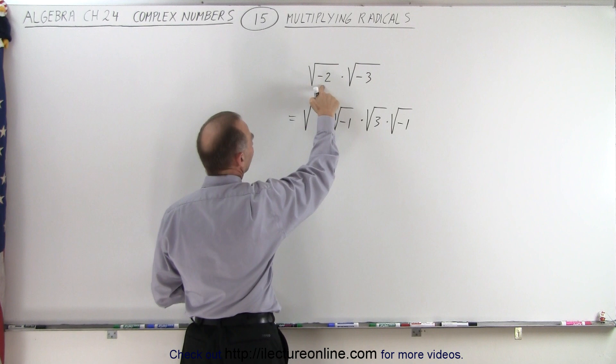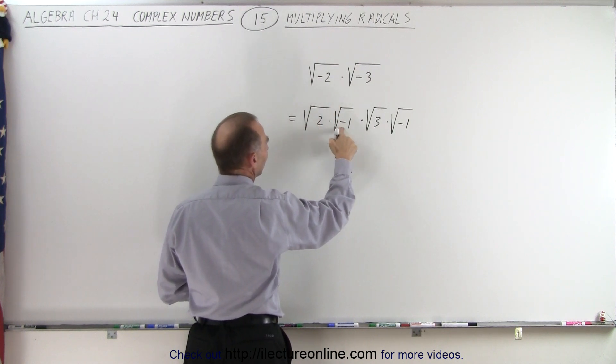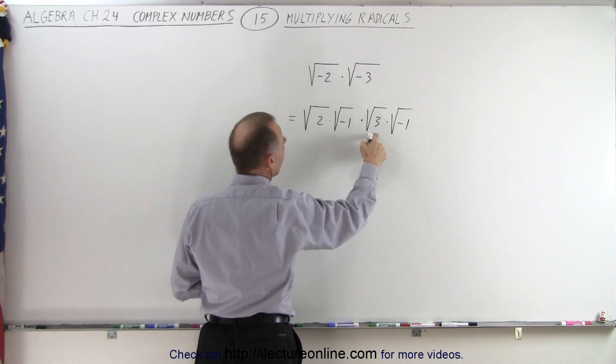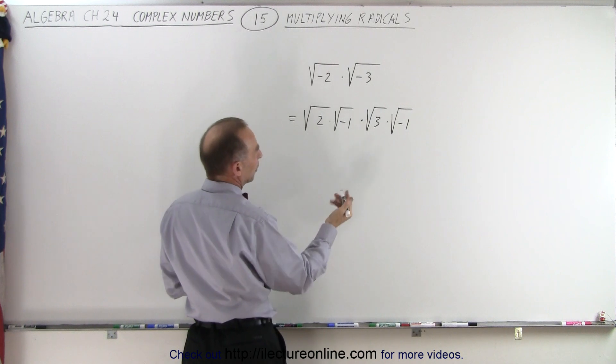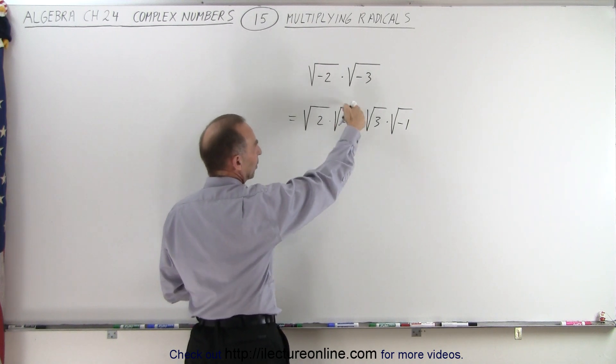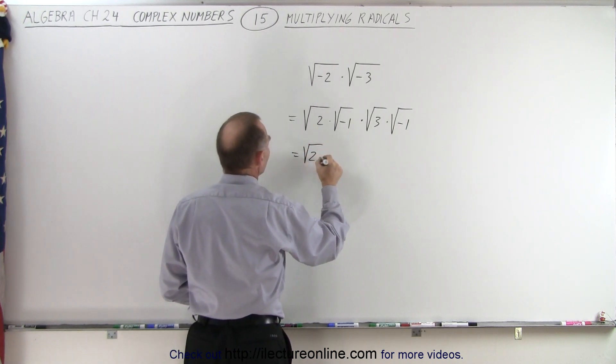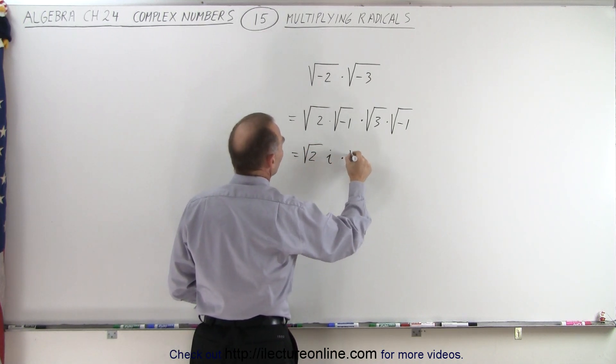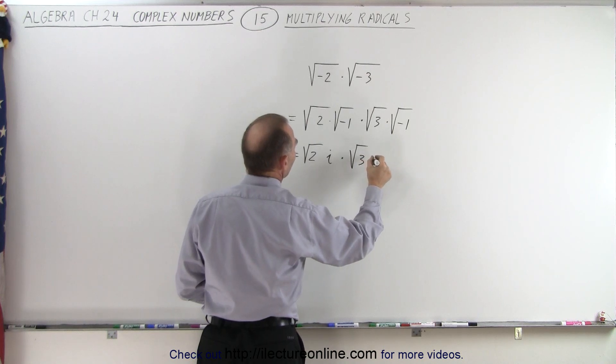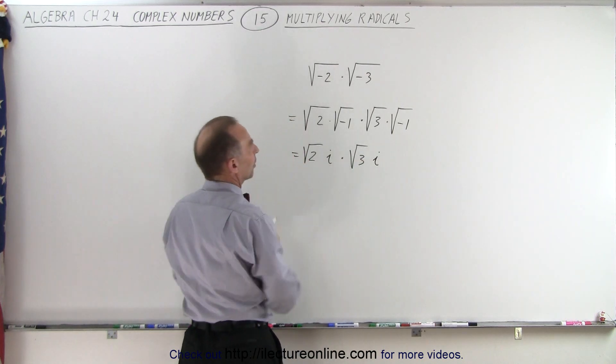In other words, we took the negative 2 and wrote it as 2 times negative 1, and the negative 3 as 3 times negative 1. Then we realize that by definition, the square root of negative 1 equals i. That means this can be written as the square root of 2 times i, times the square root of 3 times i.